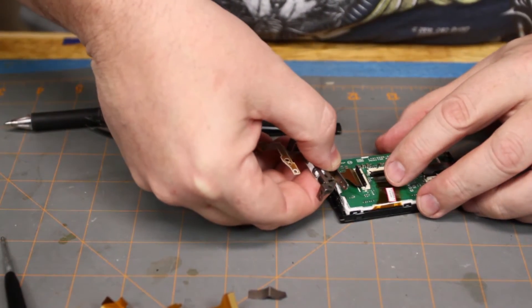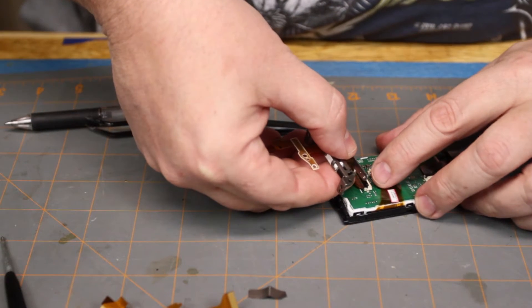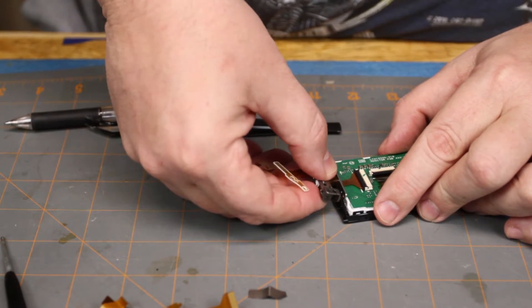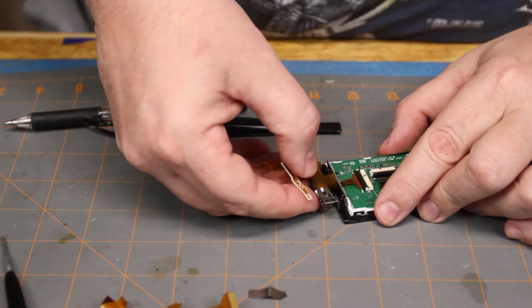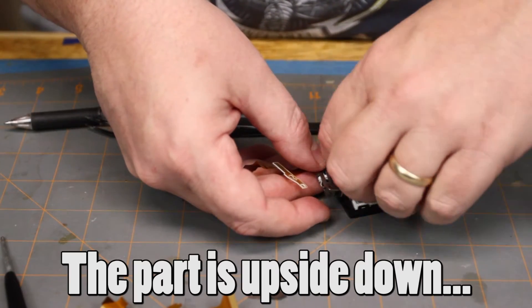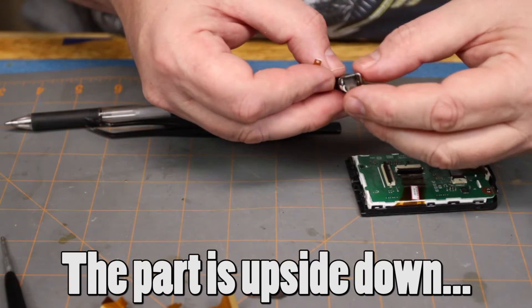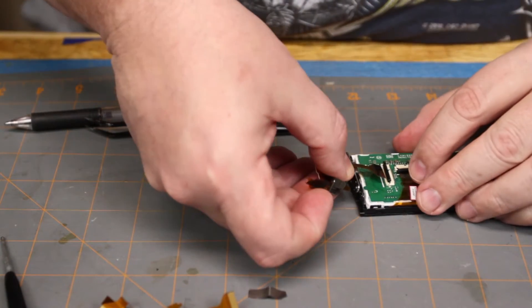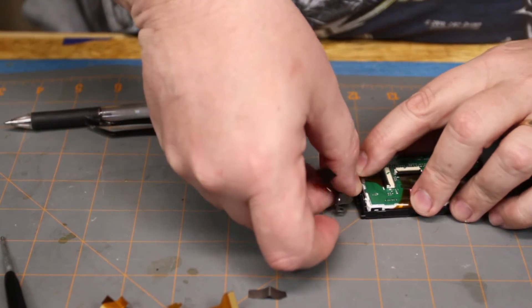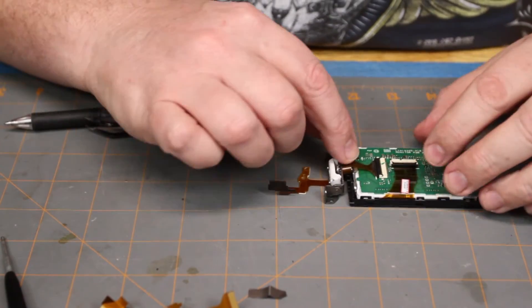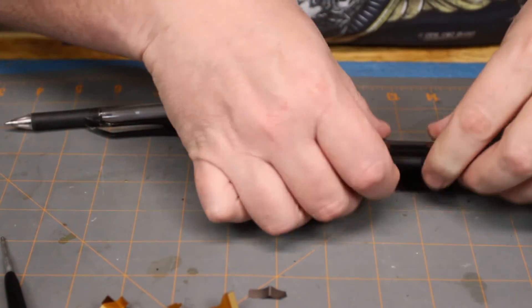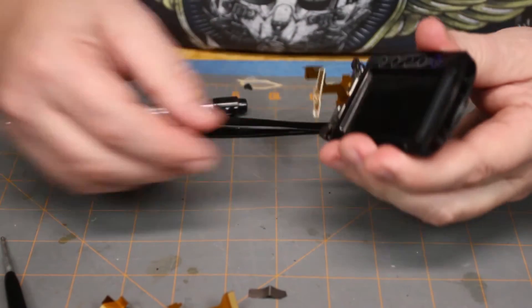So now this is supposed to go back in here. Like such. And then this is supposed to go on. Why am I not going on? Because I'm backwards, that's why. So there. That is like that. Now this goes back to here. Now we can reassemble.